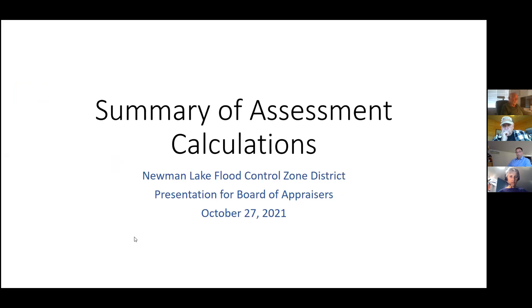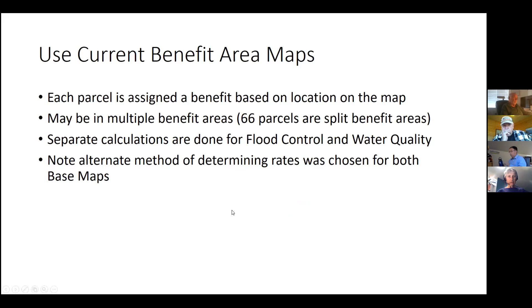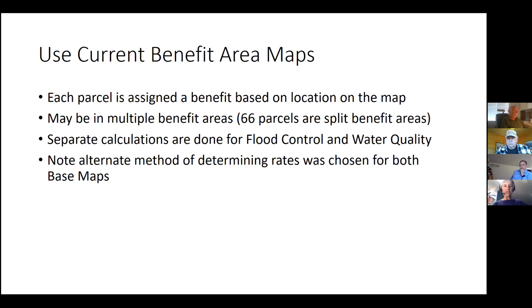So, the background is that right now we're using the current benefit maps, and these current benefit areas assign each parcel, based on their location on the map, a benefit. It's also assigned one for flood control and one for water quality, and those calculations are done separately and then added together at the end.